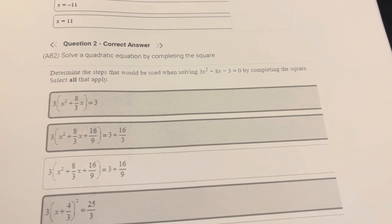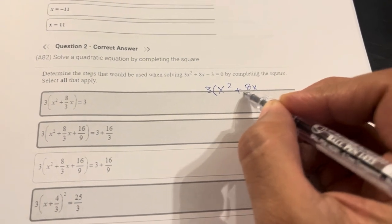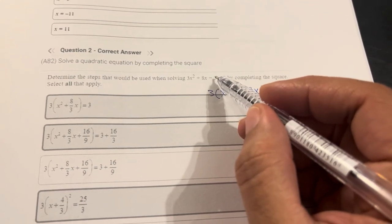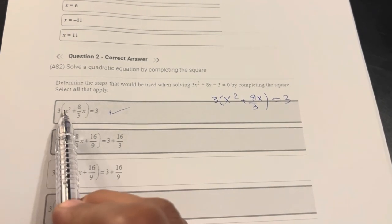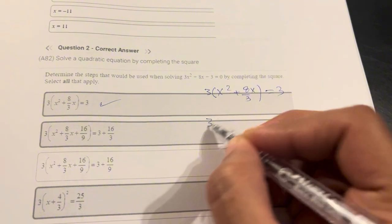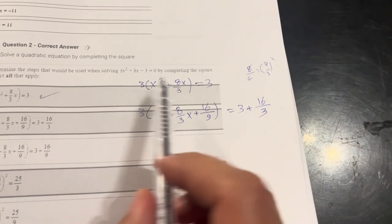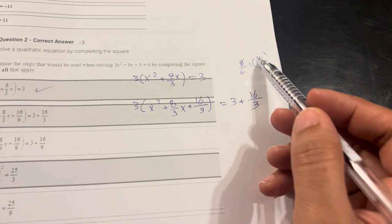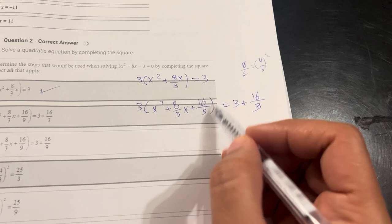Question 2 asks to select the steps to solve by completing the canonical form. Starting with 3x² - 8x - 3: take 3 outside, giving x² + (8/3)x, and move -3 to the other side, equaling 3. Then add the constant b/(2a) squared inside: b = 8, 2a = 6, so 8/6 = 4/3, and (4/3)² = 16/9. So the constant to add is 16/9.